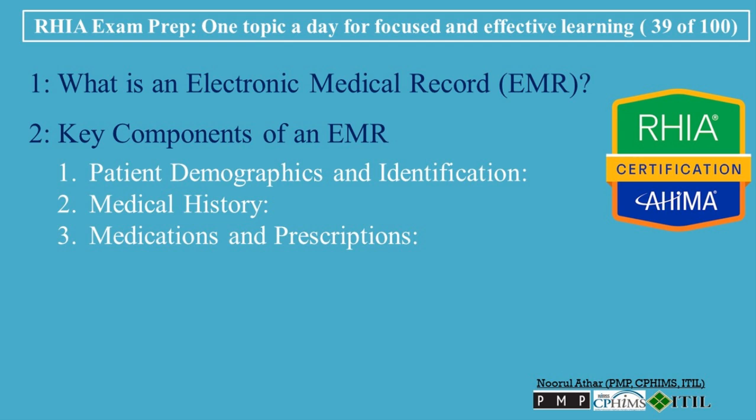The third component is Medications and Prescriptions. EMRs include current and past medications prescribed to the patient, along with dosage and frequency. This helps providers track treatments, avoid prescription errors, and monitor the patient's progress. The fourth component is Lab and Diagnostic Test Results, which are stored in the EMR, allowing providers to quickly review results without waiting for paper reports, speeding up decision-making and timely treatment adjustments.